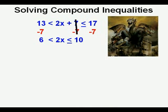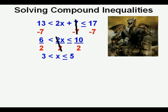We need to divide everything by the coefficient of x to get x isolated. So we divide everything by 2. The 2 over 2 in the middle cancel and we bring down what's left. 3 is less than x which is less than or equal to 5.